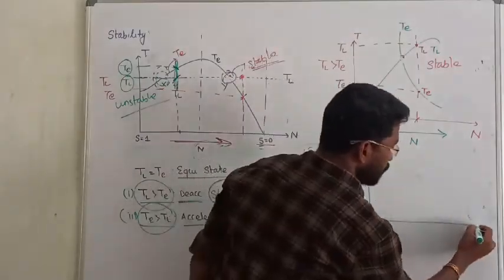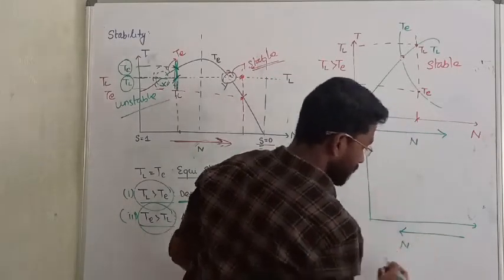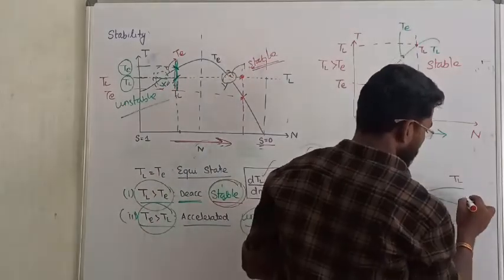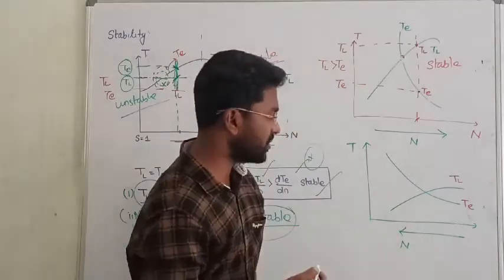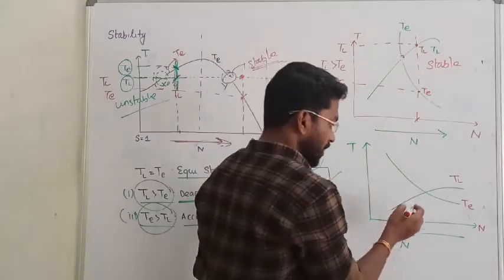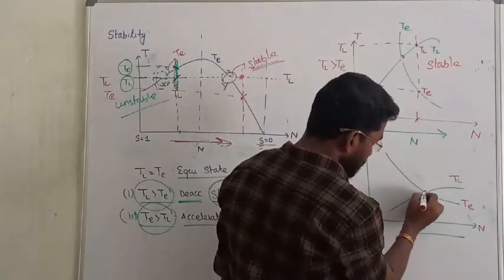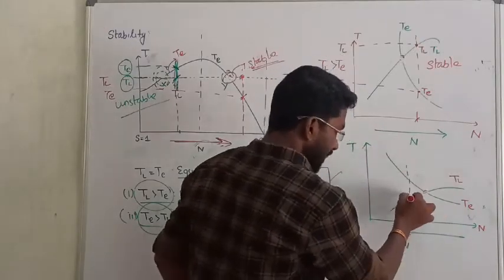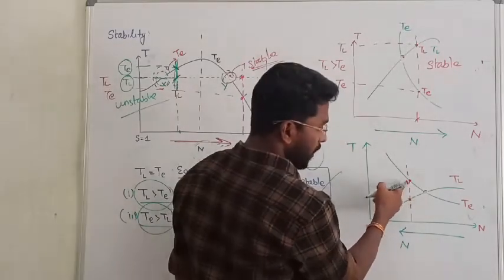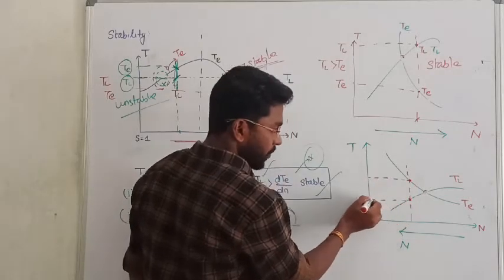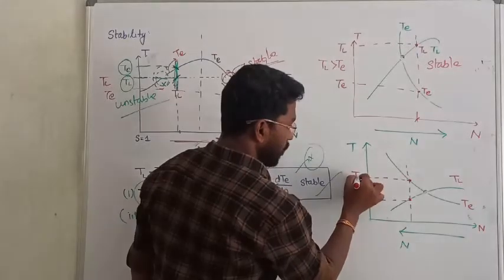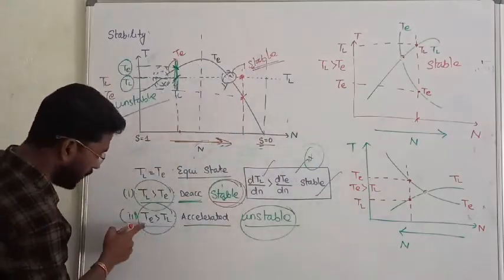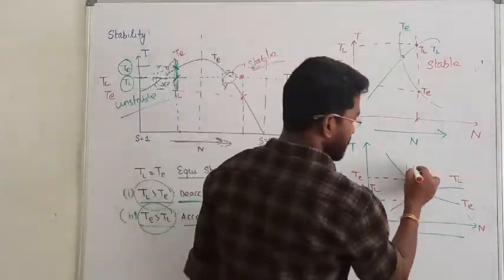So here is the methodology: first, observe the torque-speed curve and identify the direction of rotor speed. Step one: identify the direction of the speed at the equilibrium point. Step two: draw a reference line and get two values — electromagnetic torque and load torque — intersected on the Y-axis. If electromagnetic torque is greater than load torque, the system is going to be unstable. Clear?